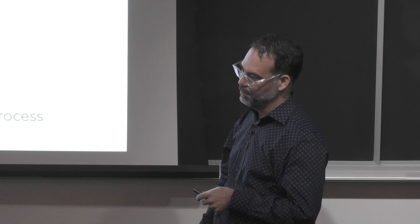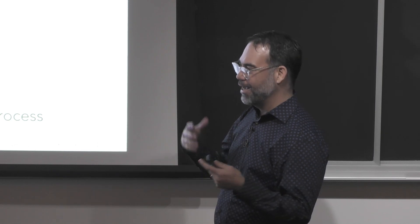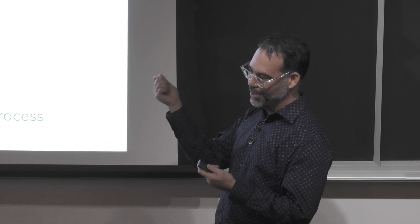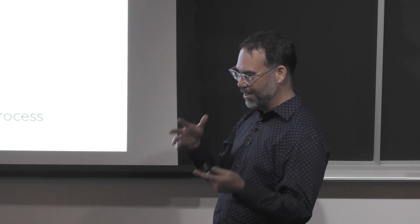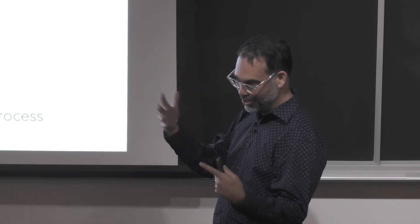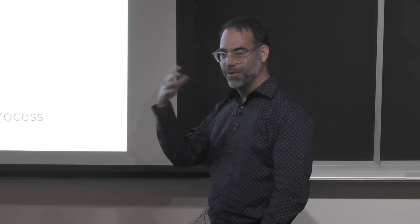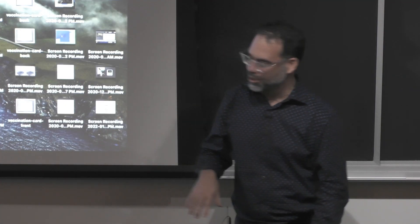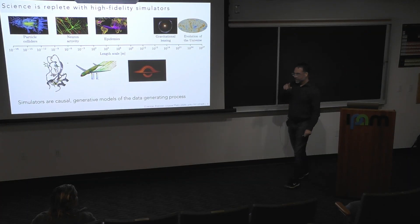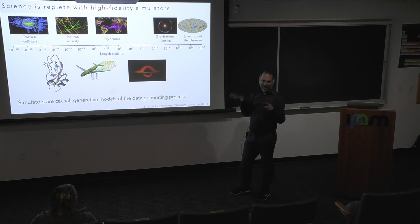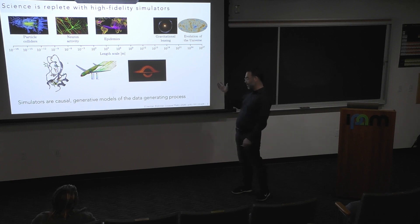Does the discrepancy between simulator causality and nature's causality matter? If you have something that describes the data well and there's a protocol for doing interventions both in the real world and in your simulator that match up, then at some point it's a very metaphysical question. I think the ultimate version of questions about emergence and AI and machine learning is going to require maintaining some notion of causality — but it will be a more nuanced discussion than what we usually have.